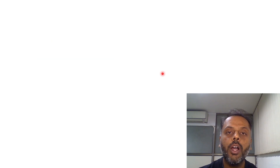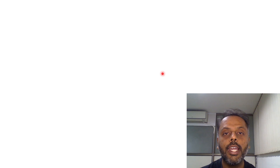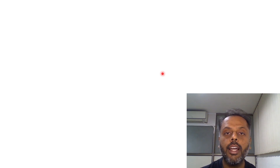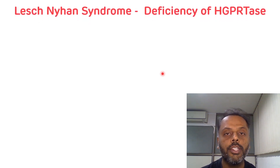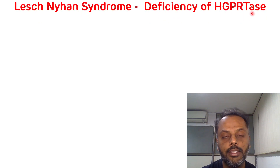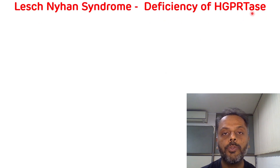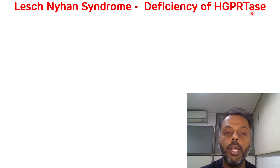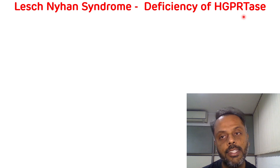As we all know, Lesch-Nyhan Syndrome is the disorder associated with the Purine Salvage Pathway, and it occurs due to the deficiency of the enzyme HGPRT — that is hypoxanthine-guanine phosphoribosyltransferase. Now, the mnemonic to remember Lesch-Nyhan Syndrome is HGPRT itself.